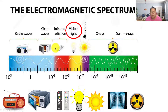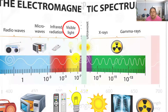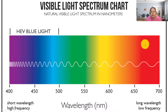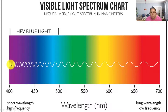Now we continue to visible light. Visible light follows the rainbow colors. Starting with red color, which has the longest wavelength, and ending with violet or purple color near the ultraviolet, which has the smallest wavelength. This range is the visible light.